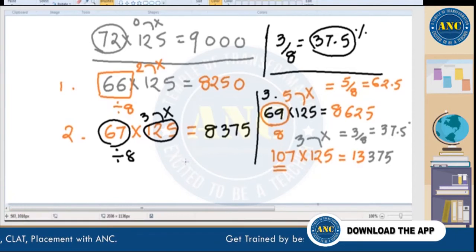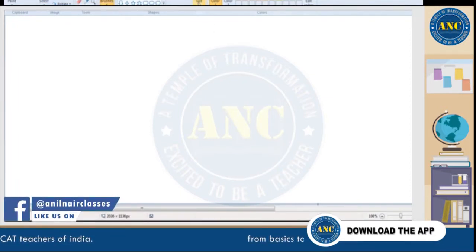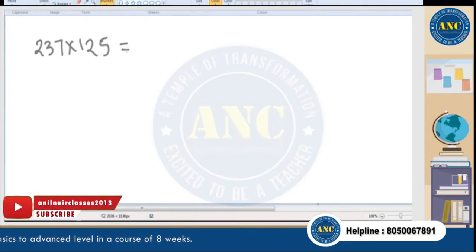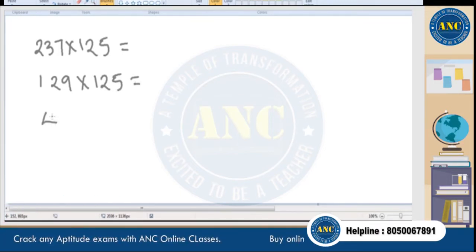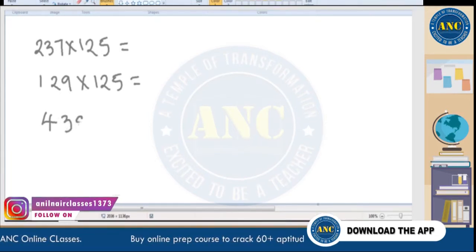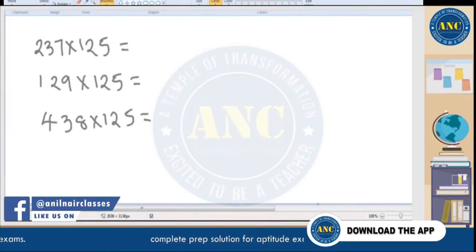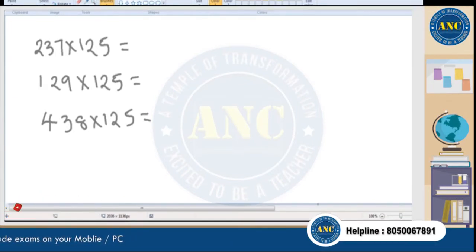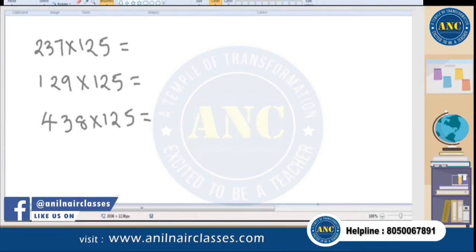I'm going to give some more large numbers. Let it be: 237 × 125, then 438 × 125. I need answers to these questions. If you can answer these three questions — for × 5, × 25, and × 125 — then all three methods are clear to you.